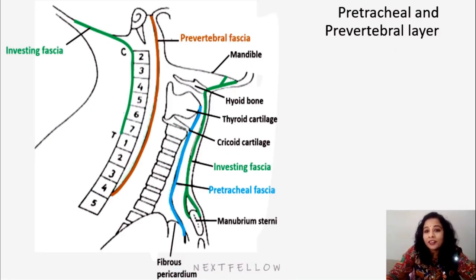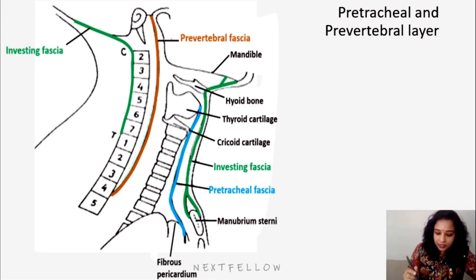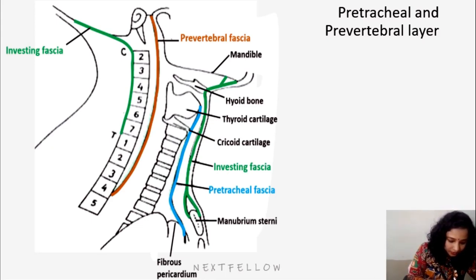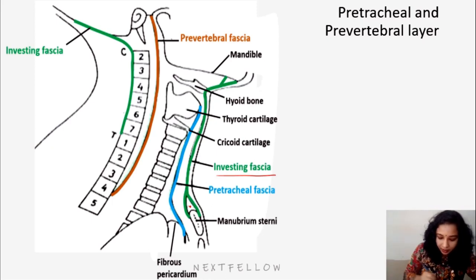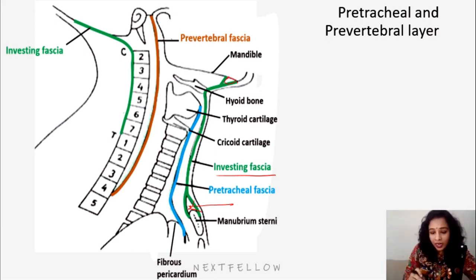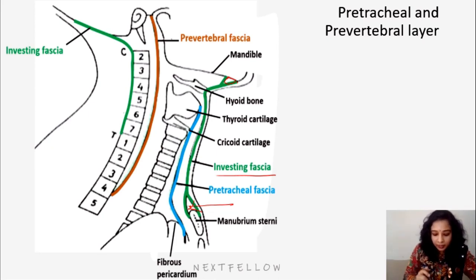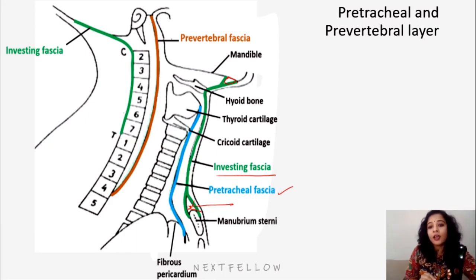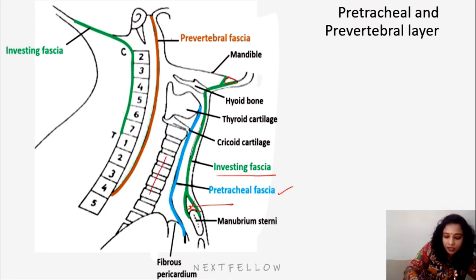Further we shall continue with the pre-tracheal and pre-vertebral layers. The green one we are seeing is the investing layer of the deep cervical fascia. We saw the Burns space here above the manubrium sterni. The pre-tracheal layer is the blue one shown here — it invests along the trachea and the larynx. We can see the trachea and larynx, and it attaches to the thyroid and cricoid cartilages.